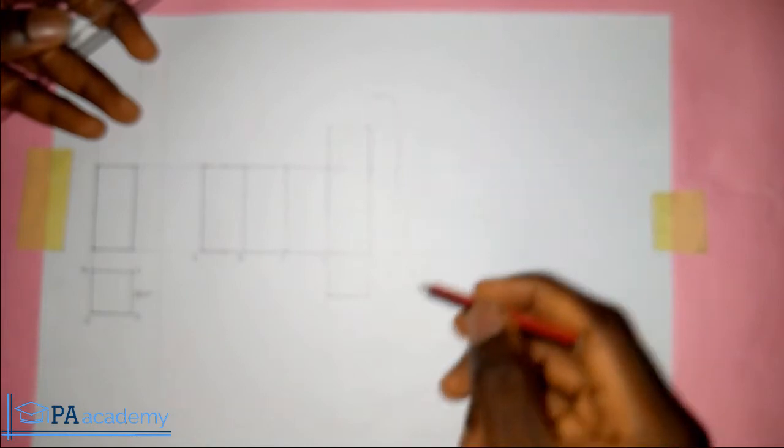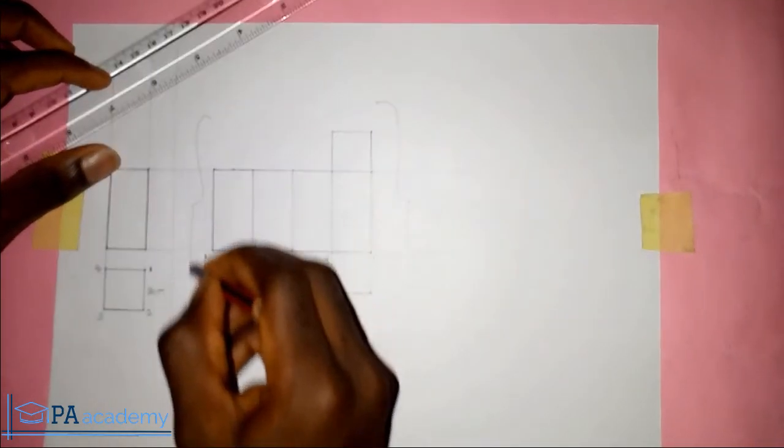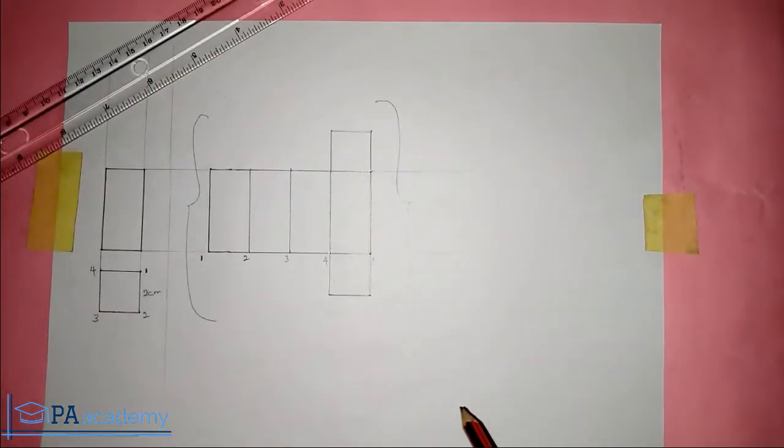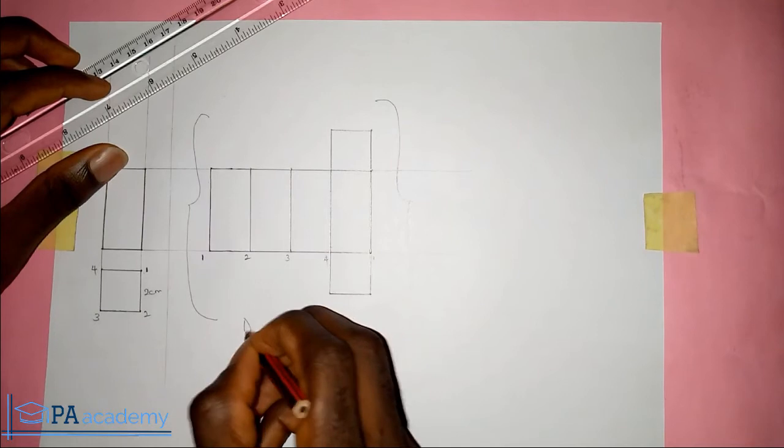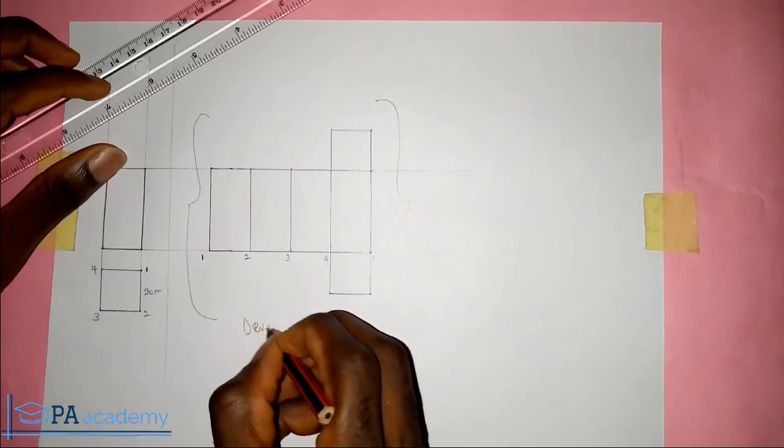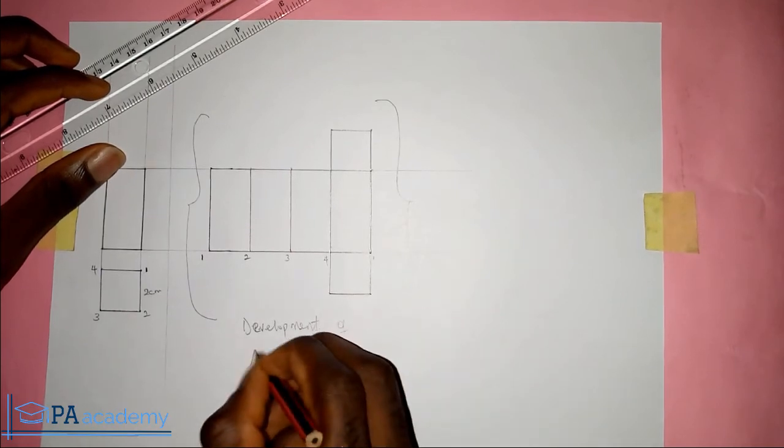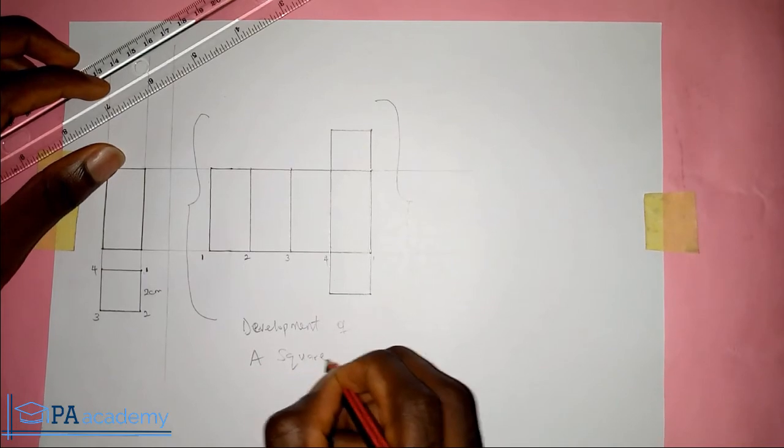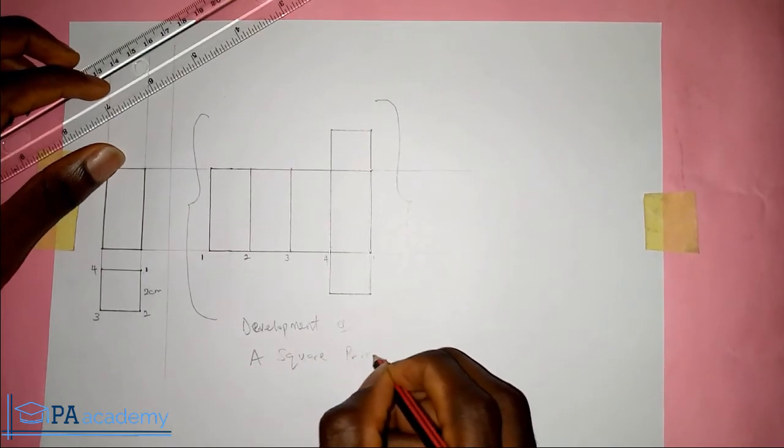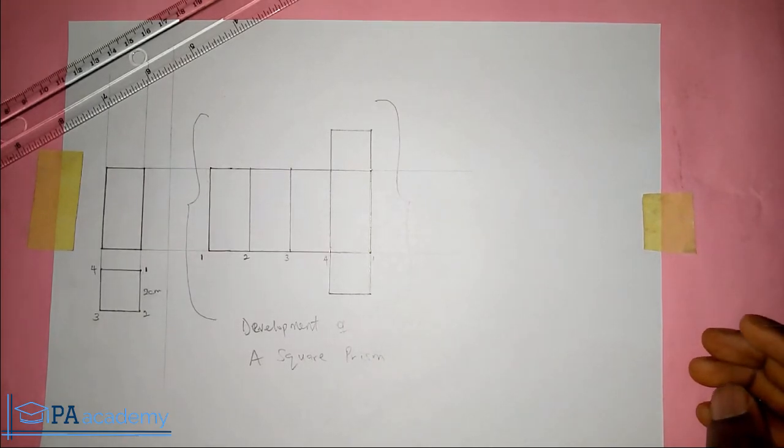So this part of the drawing, this part of the drawing is what we mean by the development itself. Now the development of a square prism. So this is how you draw the development of the square prism.